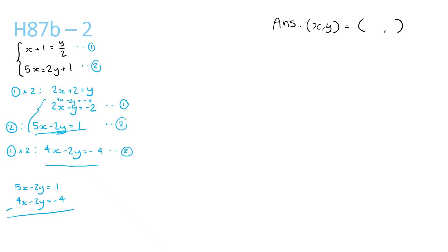And we get 5x minus 4x is x. So x minus 2y minus negative 2y is plus 0. So it's just 0. So x equals 1 minus negative 4 is 5. So x is 5 for this one.